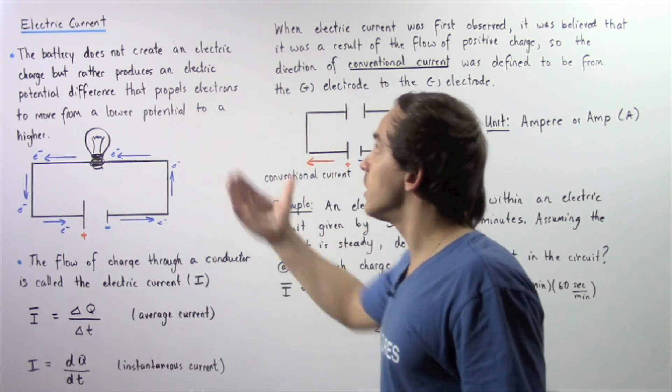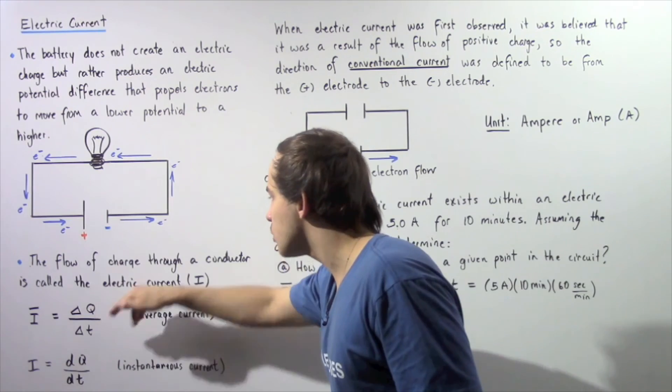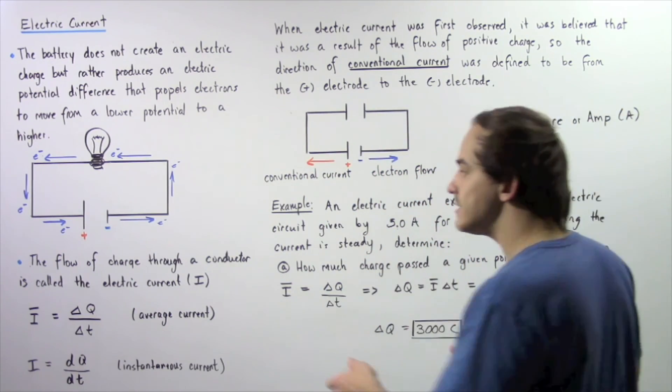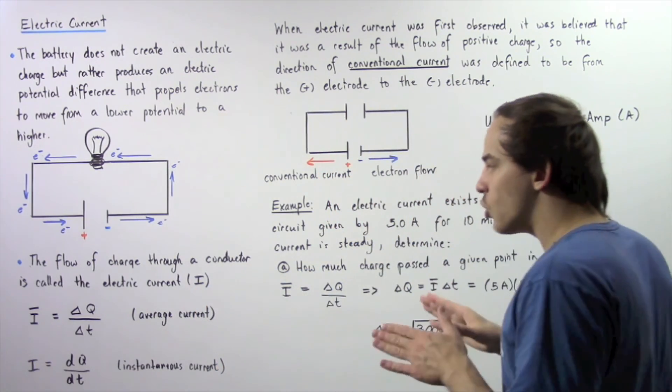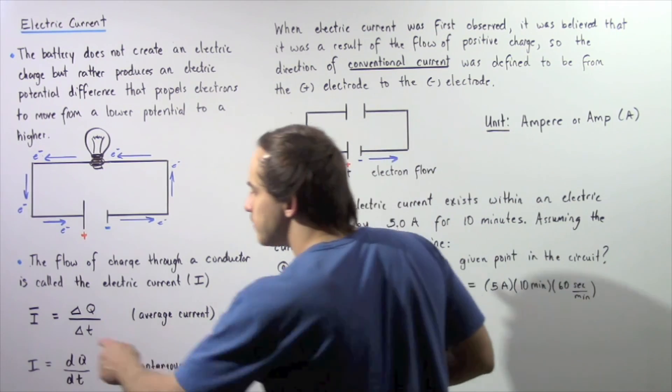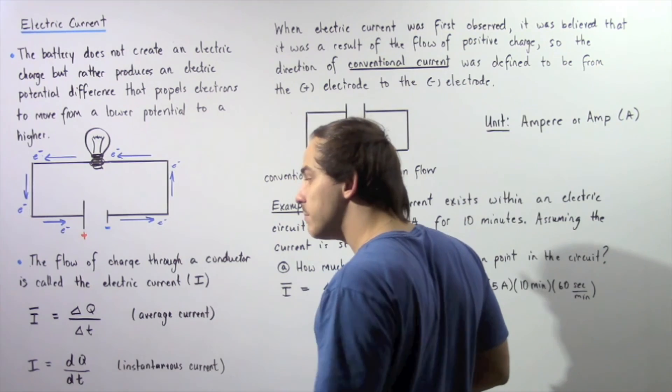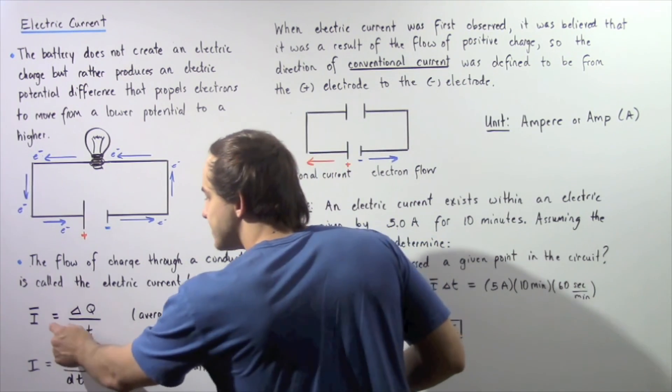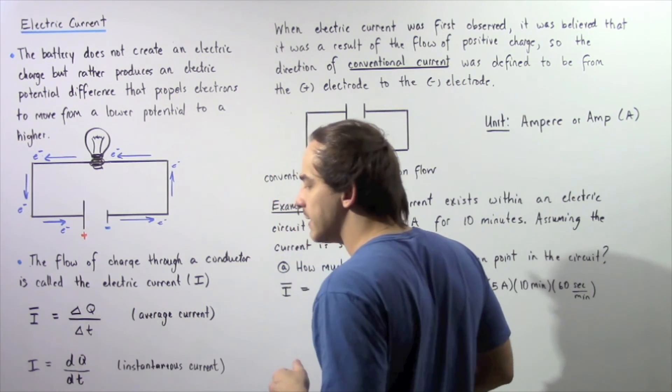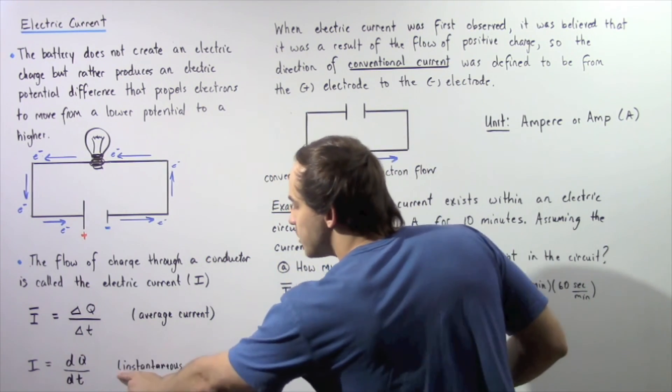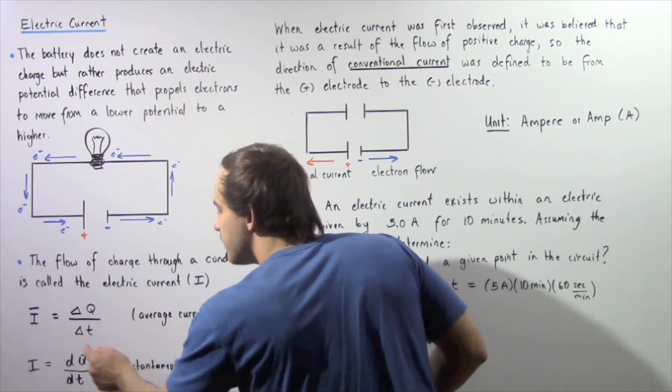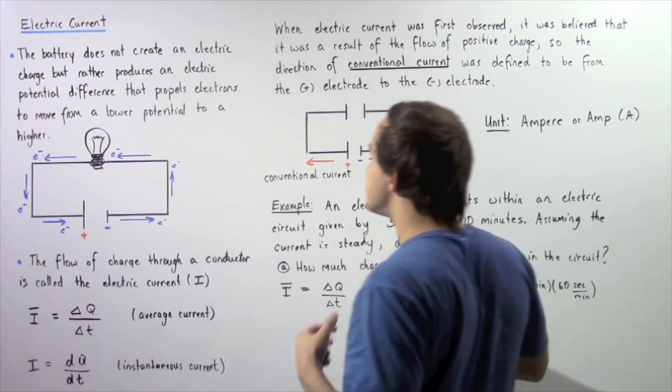So we define the electric current as the flow of charge through some region within a conductor. And our electric current is given by an uppercase I. So we define two types of current. The average current is given by I with the bar symbol on top that symbolizes the average, and this is equal to the change in our electric charge per some unit time. Now we can also define the instantaneous current at some given moment in time to equal the derivative of our Q with respect to time.